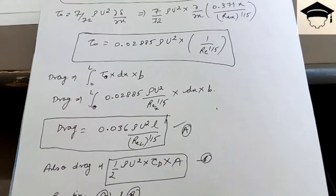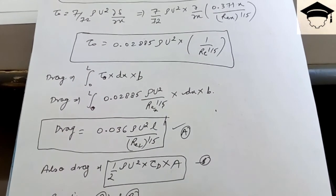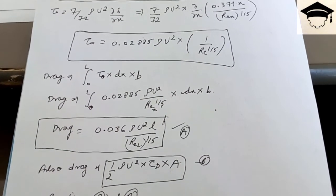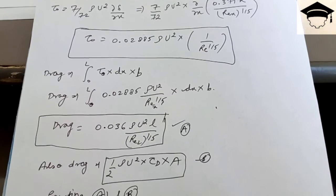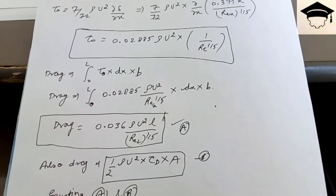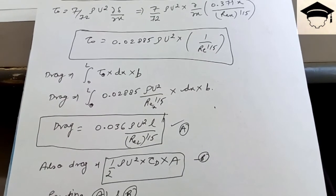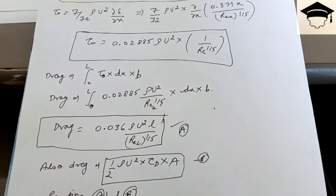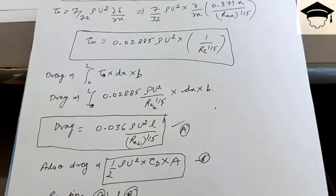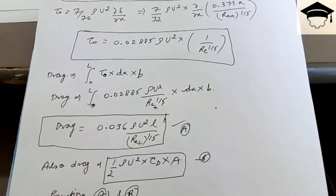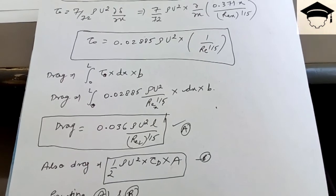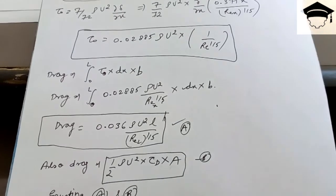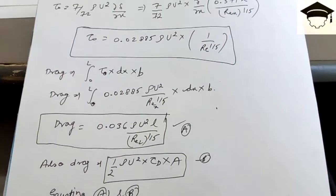The drag force is also given by F_D = ½ ρU² × C_D × area, where area = length × width. Assuming width = 1 and equating the two drag expressions: 0.036 ρU²L / Re^(1/5) = ½ ρU² × C_D × L. Solving, the coefficient of drag is C_D = 0.072 / Re^(1/5).